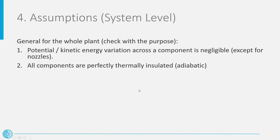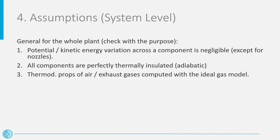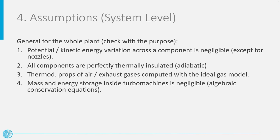A second assumption is that all the components are assumed adiabatic. Keep in mind that this is a reasonable simplification for a large engine. For a small power capacity gas turbine this assumption will not hold. For instance, in micro gas turbines, heat losses may be responsible for a significant drop in conversion efficiency. Another common assumption is that thermodynamic properties of air and flue gases can be computed with the ideal gas model. The validity of this assumption was already discussed in Module 6. As a fourth point, the mass and energy accumulation within the turbomachines is taken as negligible with respect to the overall dynamics of the system. While the volume of the turbine machines is usually too small to affect the engine dynamics, energy accumulation may instead play a role depending on the application or the problem under investigation.